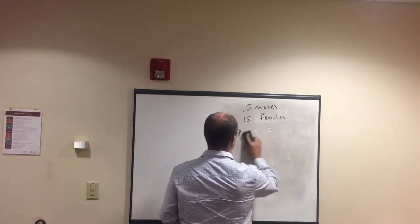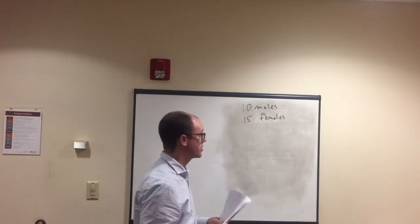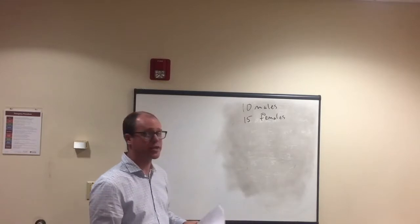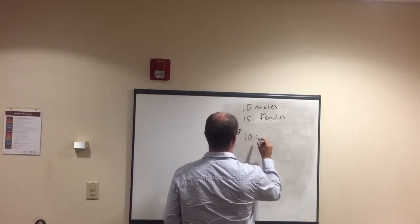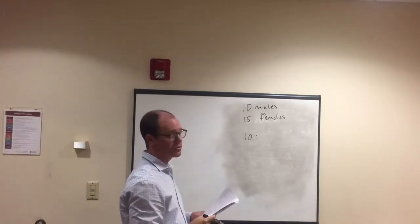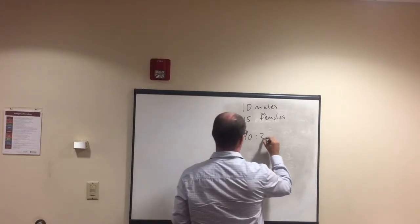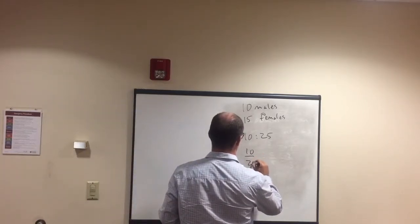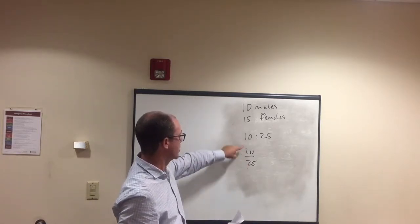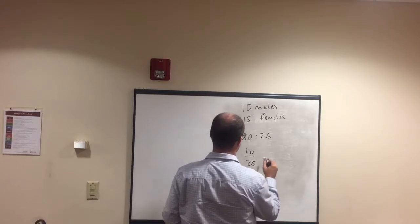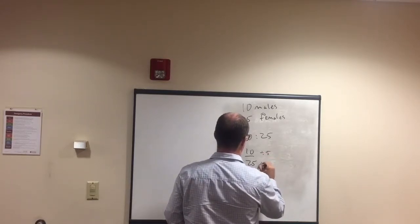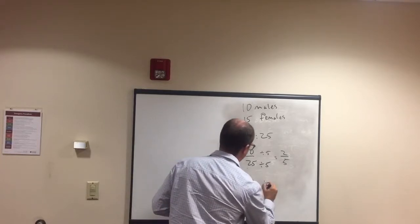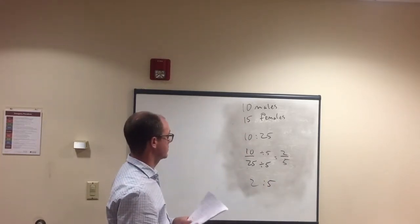Read questions carefully — this is important in test-taking. What if it said: what's the ratio of males to everybody? That's not still 2 to 3. It's 10 males to everyone, including males: 10 plus 15 is 25. So the ratio is 10 to 25. Reducing by 5 gives 2 to 5 — the ratio of males to everybody.